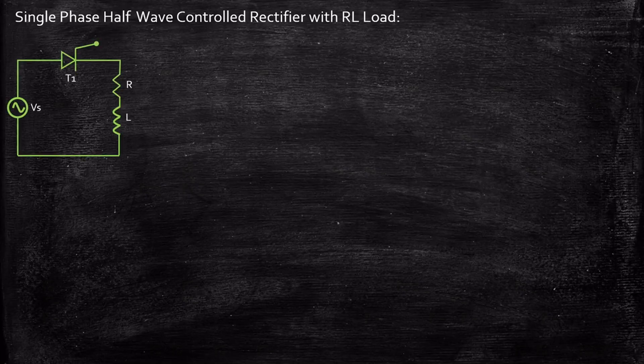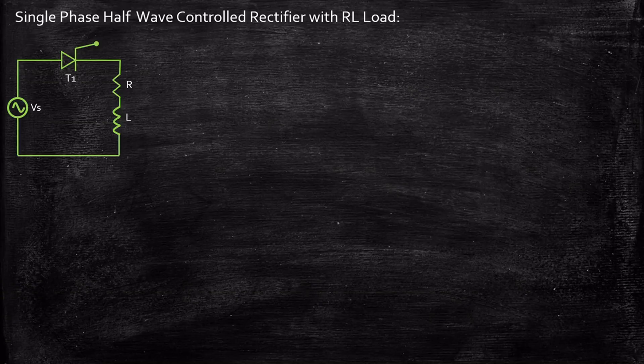Hello everyone. In today's video we're going to take a look at single-phase half-wave controlled rectifier with RL load. This is the circuit diagram of a half-wave controlled rectifier with an RL load. Rectifiers are devices used to convert AC to DC. Controlled rectifiers use thyristors or SCRs to control the power at the output terminals across the load. With a half-wave controlled rectifier, we employ only one thyristor and control only one half cycle of the power supply.